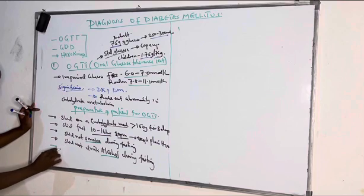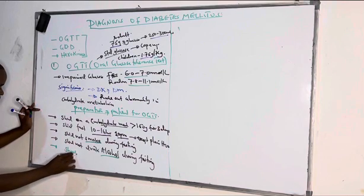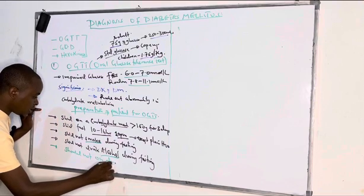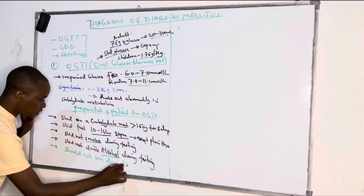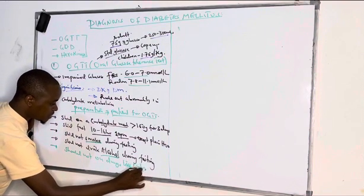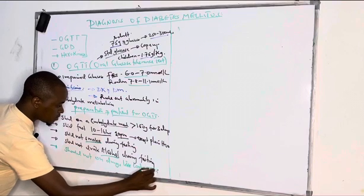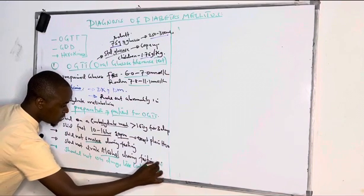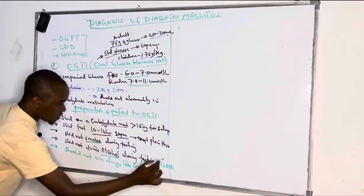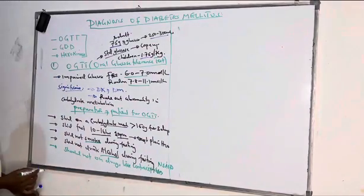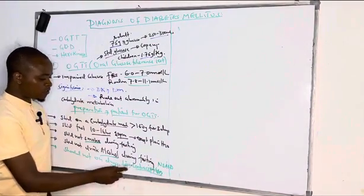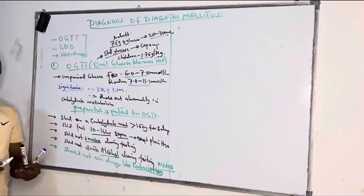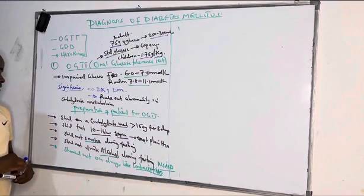These patients should also not be on drugs such as oral contraceptives, which are used for family planning, and NSAIDs — non-steroidal anti-inflammatory drugs. They should not be on oral contraceptives or NSAIDs, which can affect glucose levels.